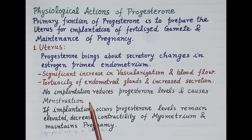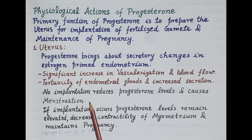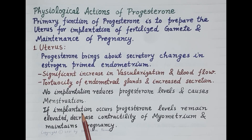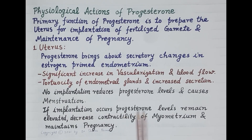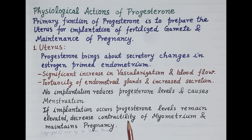The fall in progesterone results in menstruation — breakdown of the proliferated endometrial tissue and spiral arteries, and endometrial tissue and blood are passed from the uterus as menstrual flow. However, if the egg is fertilized and implantation occurs, progesterone levels remain elevated, which decreases the contractility of the myometrium and maintains the pregnancy.